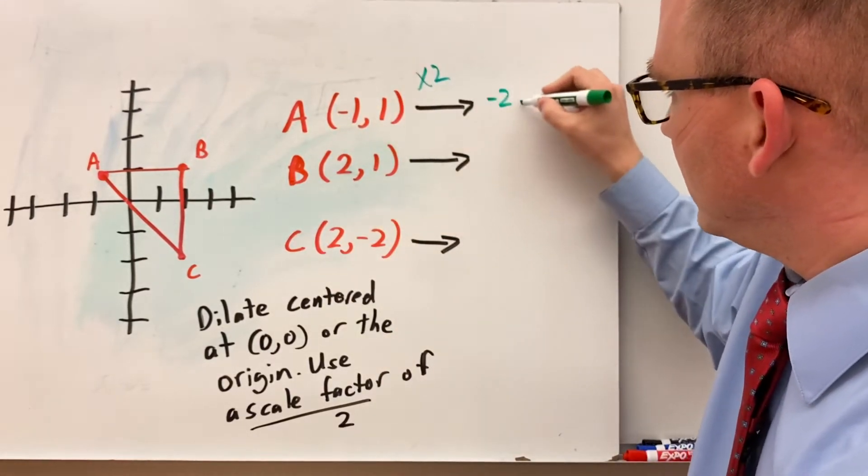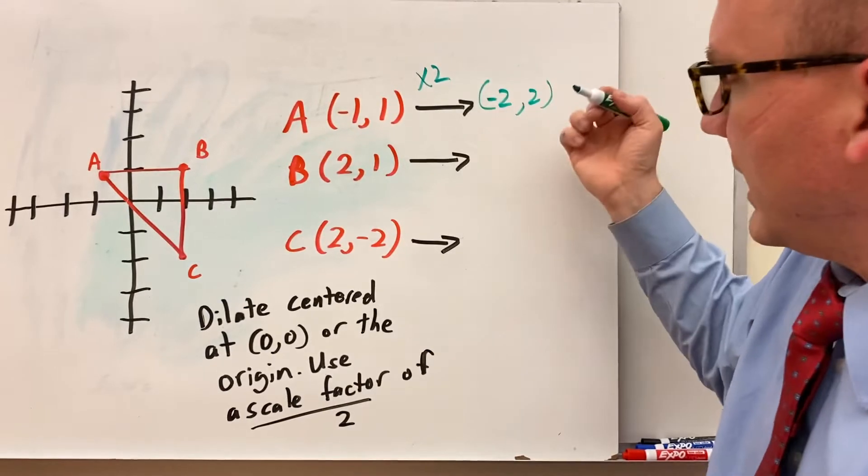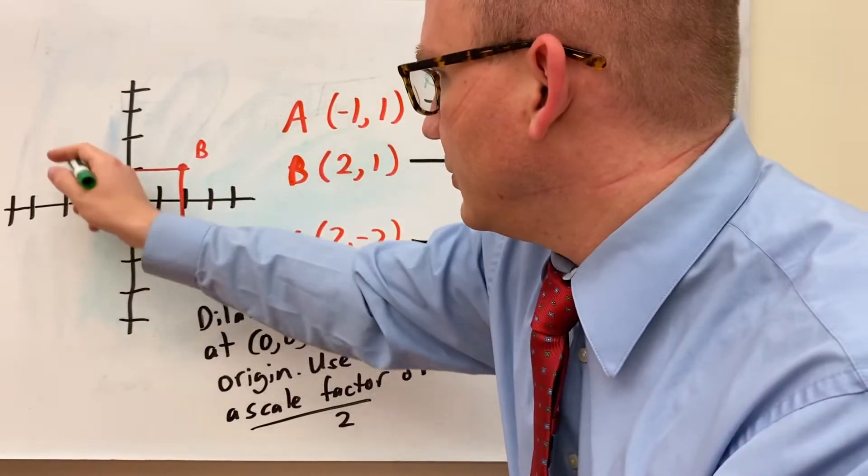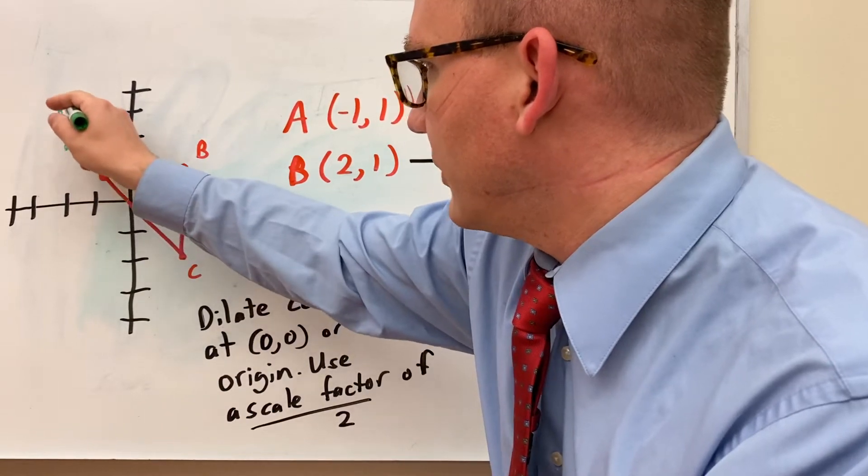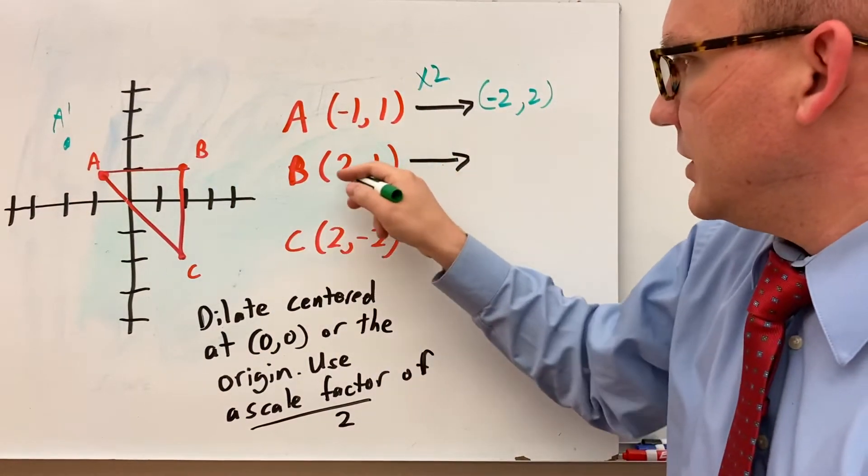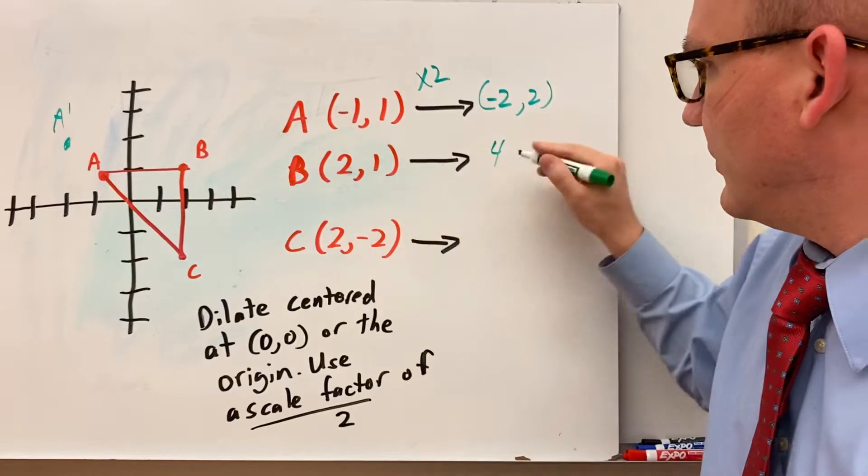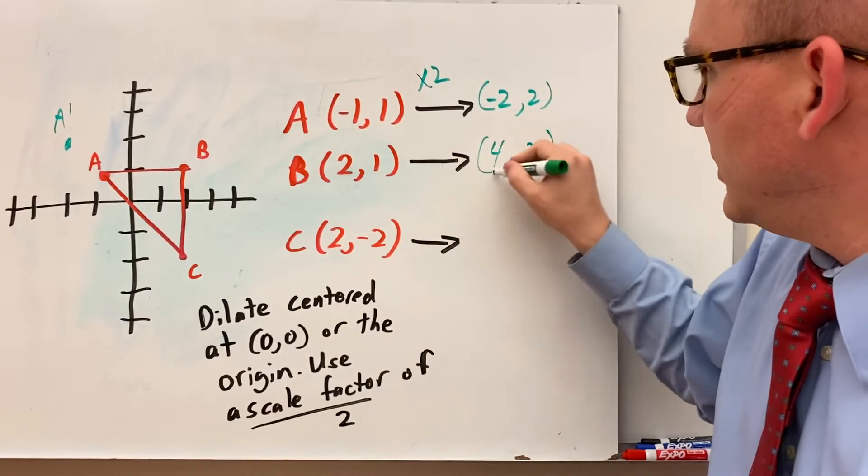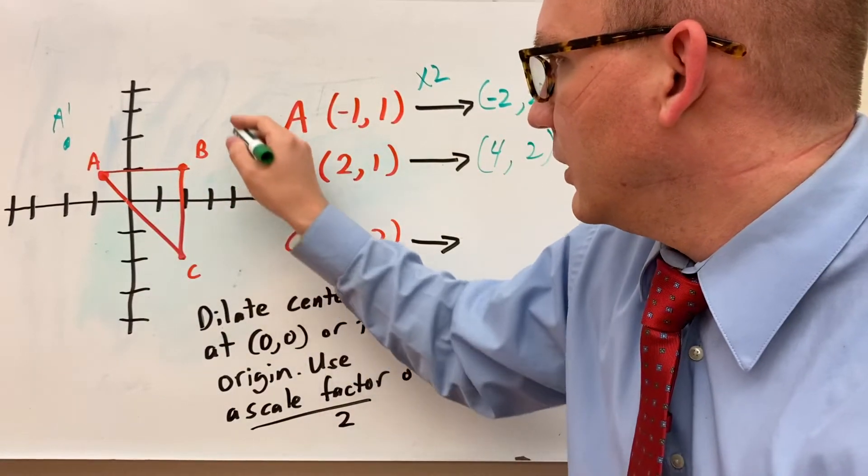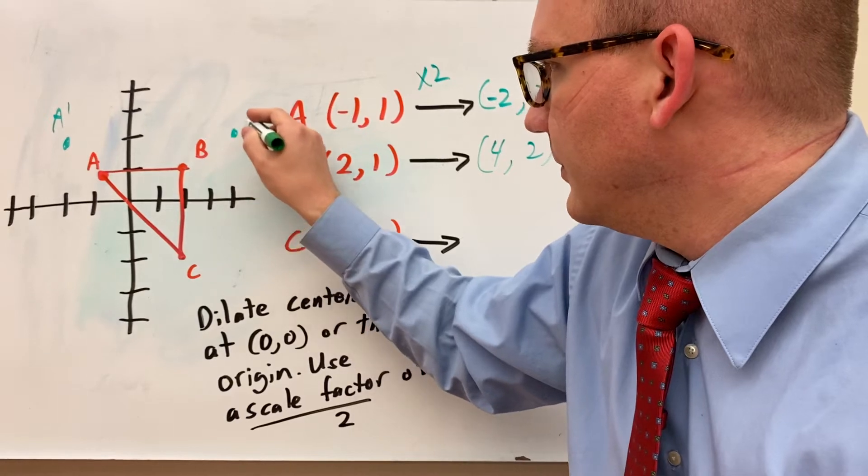So it would be negative 2 comma 2 would be A prime. So if I go negative 2 up 2 it's going to be A prime. B would be 2 times 2 is 4, 2 times 1 is 2, so B would be 4, 2. So over 4 up 2 would be B prime.